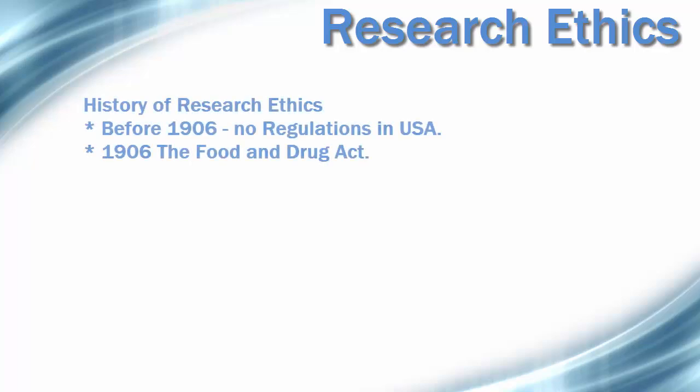Prior to 1906, when the Pure Food and Drug Act was passed, there were no regulations regarding the ethical use of human subjects in research. There were no consumer regulations, no Food and Drug Administration, no common rule, and no institutional review boards at universities. What follows is a brief discussion of why federal rules and regulations were established and why the IRB became necessary at universities.